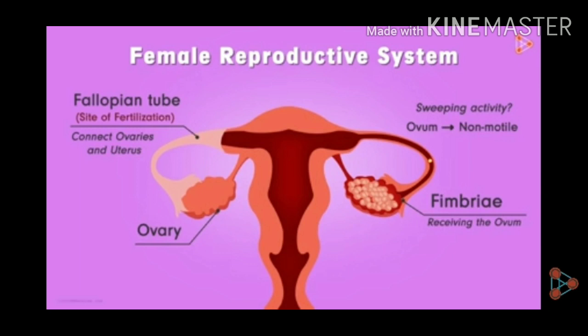On both sides, two ovaries are present, which produce ova or egg each month. Next, there are finger-like projections which are known as fimbriae, and fimbriae help to move this egg from the ovary to the fallopian tube.